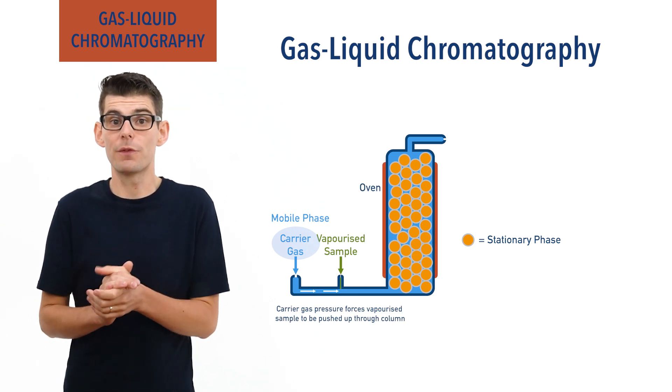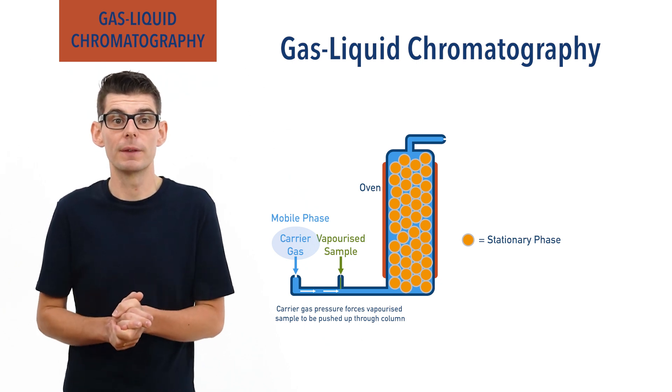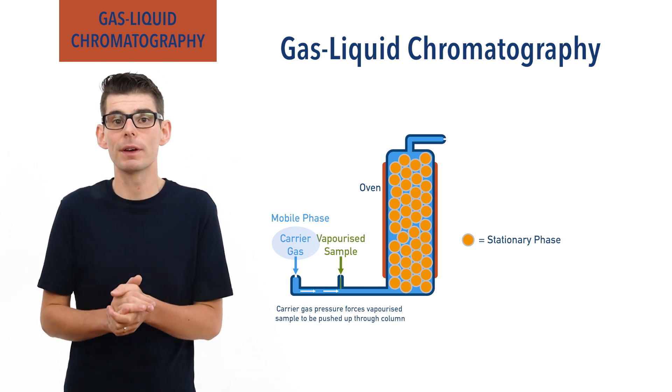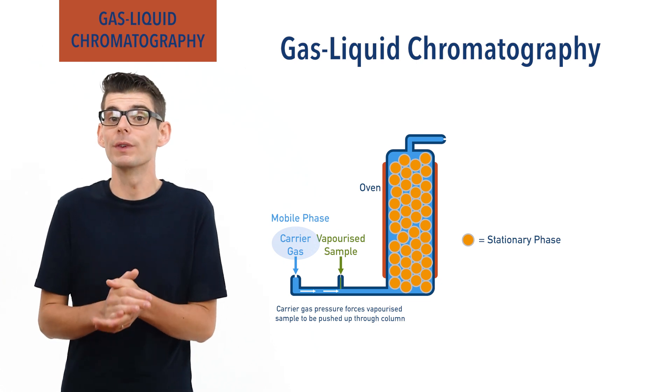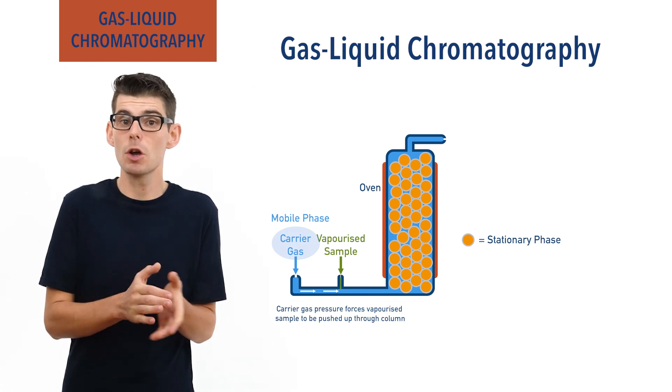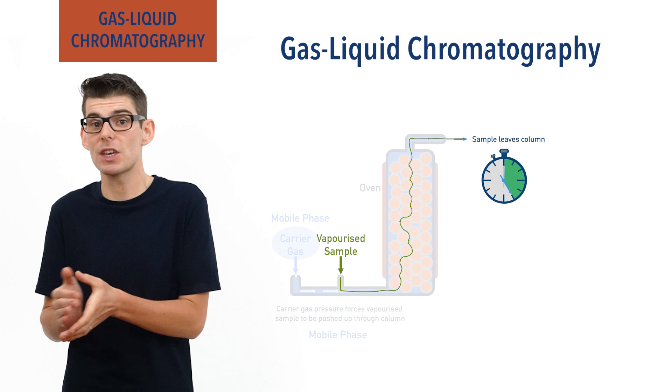Just like with thin layer chromatography and column chromatography, a mixture can be separated and molecules in the mixture analyzed based on the length of time they spend in the mobile phase compared to the stationary phase.